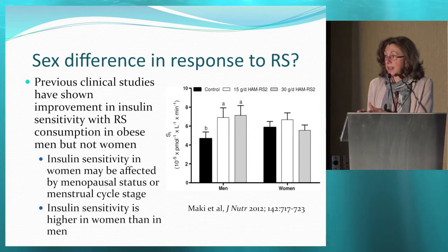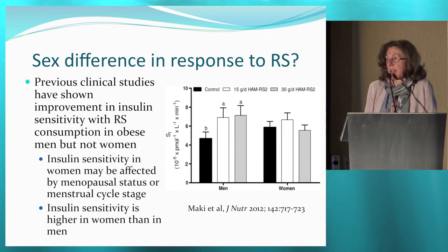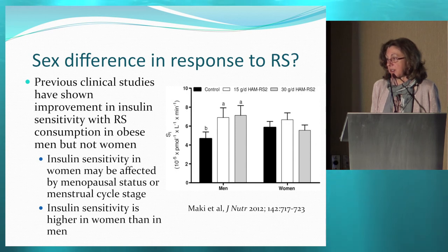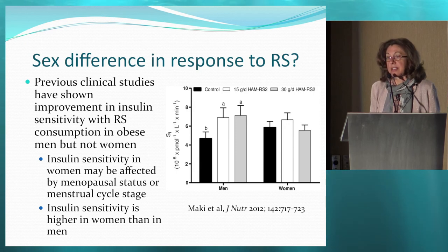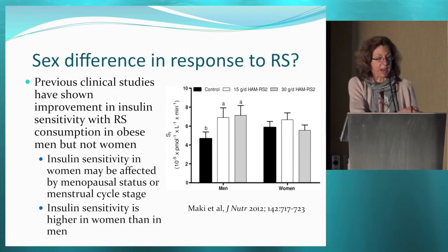The next slide shows a study done in an animal model using resistant starch as the source of dietary fiber. These mice were given two different doses of resistant starch, either 18% or 36%. What you can see is the adiponectin protein content in the epididymal fat pad of the animals, and there was a significant increase in adiponectin.